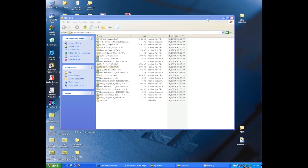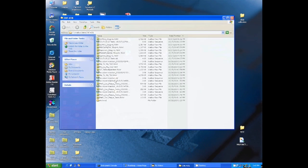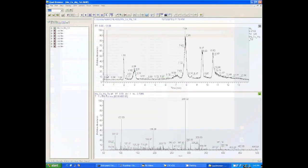When you're ready to look at data, you can just go to that file and double-click on it, and it should open up in the qual browser. In this qual browser you're going to have two windows. The top is the chromatogram, the bottom is the mass spectrum.